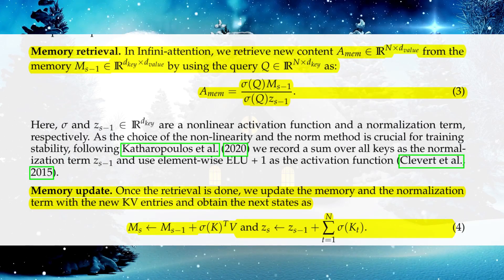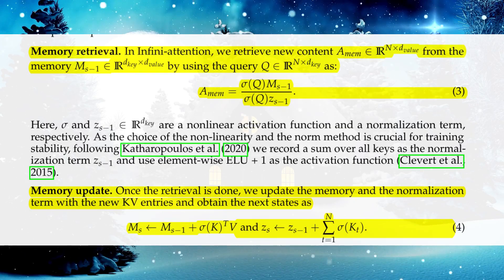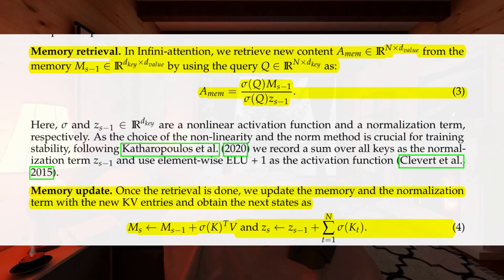Book summarization task: An 8B LLM with Infini-attention achieves state-of-the-art performance on the BookSum dataset, summarizing entire books by processing 500K length sequences.